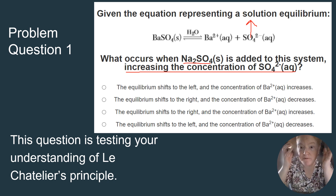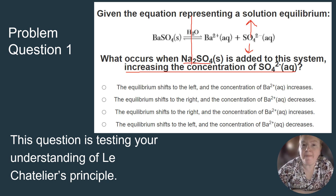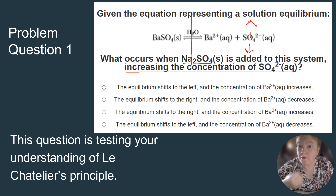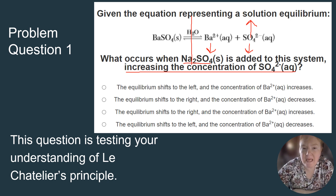If the stress is that I have too much SO4²⁻, I have to use some of it up. Anything else on the same side as SO4²⁻ will also go down — Ba²⁺ is on the same side, so it will also decrease as the equilibrium resolves the stress. Anything on the opposite side, BaSO4, will increase.